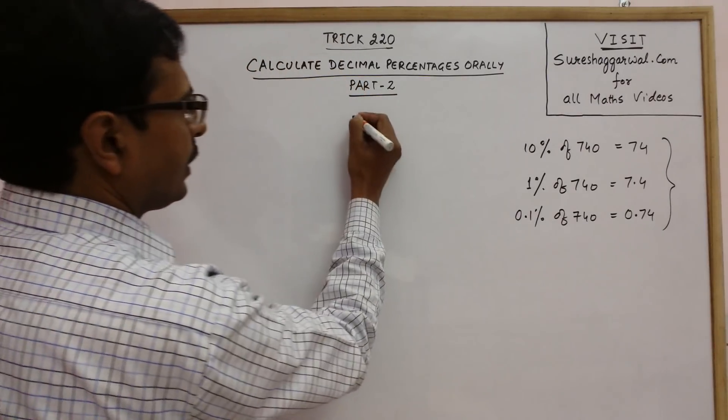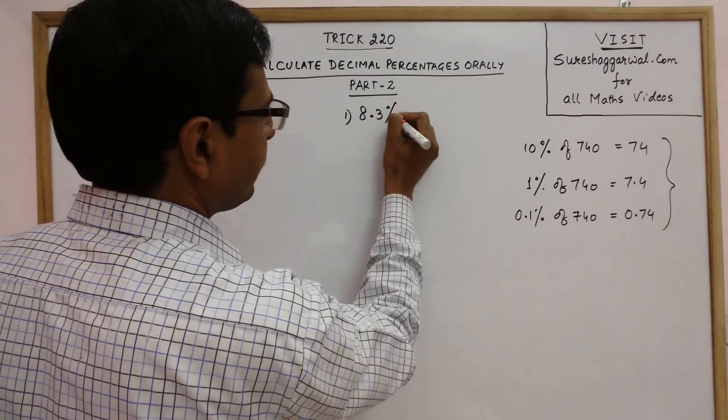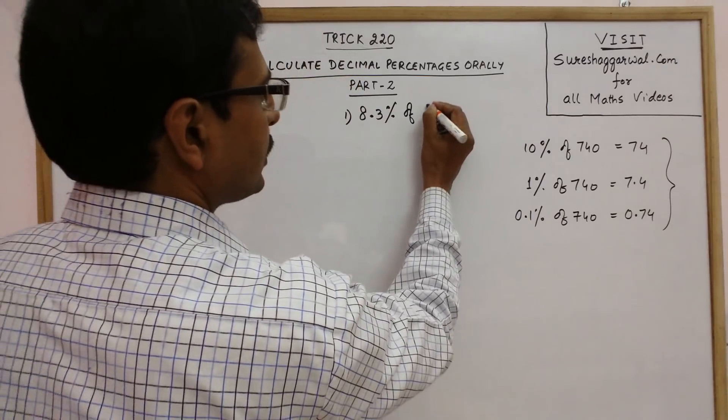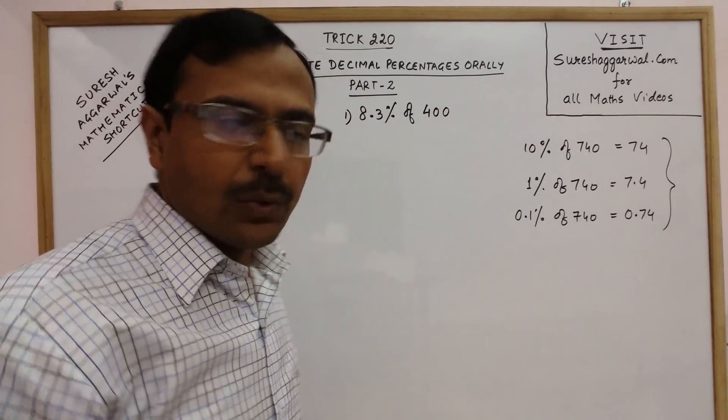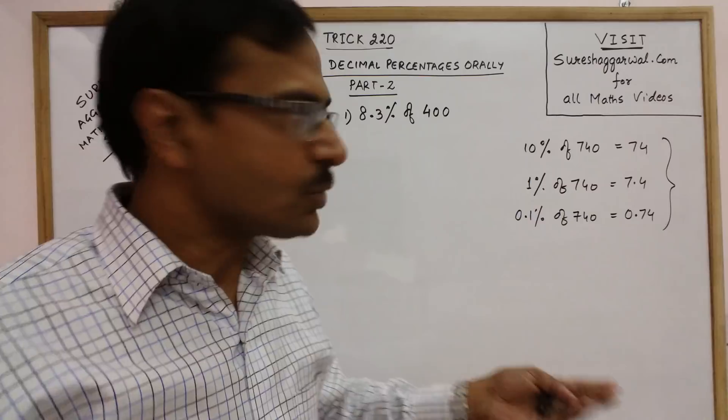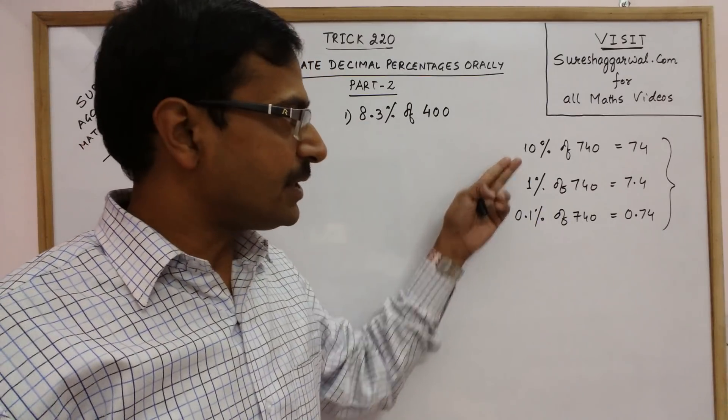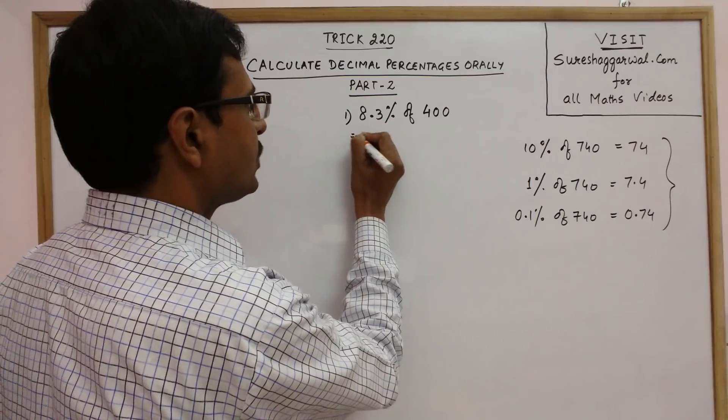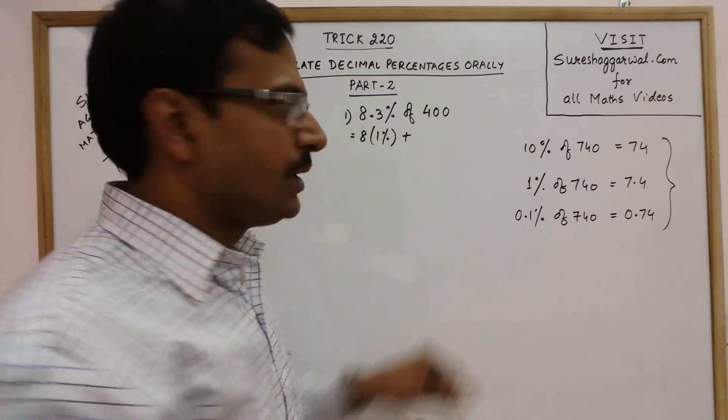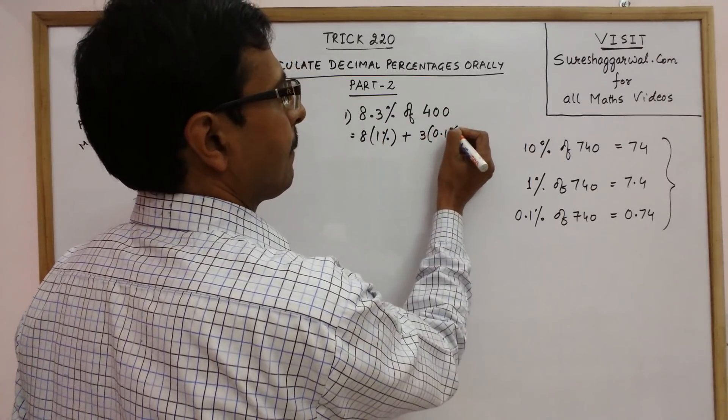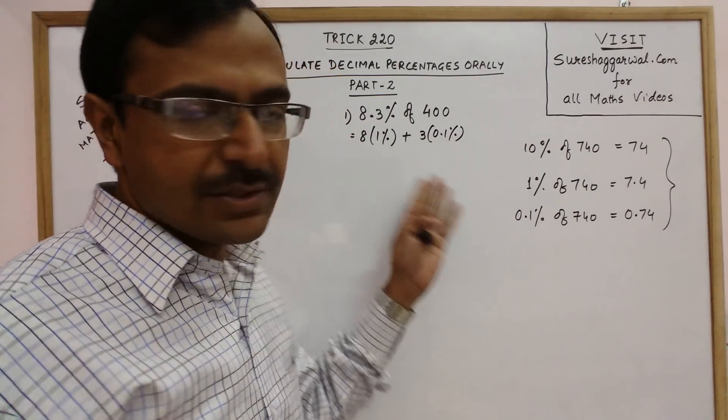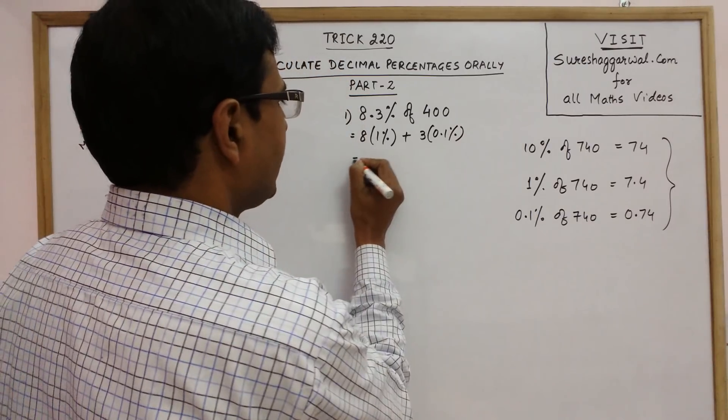Now this is 8.3%. Now see 8.3% of any number is difficult to calculate. I am taking a simple number so that we can understand the steps here. Now let us break this 8.3% into 10, 1 and 0.1%. So obviously this is less than 10% so we don't need 10% here. So 8.3% is actually 8 times 1% and 0.3% is 3 times 0.1%.